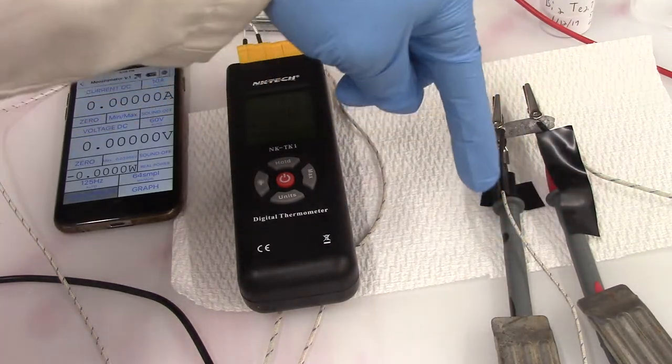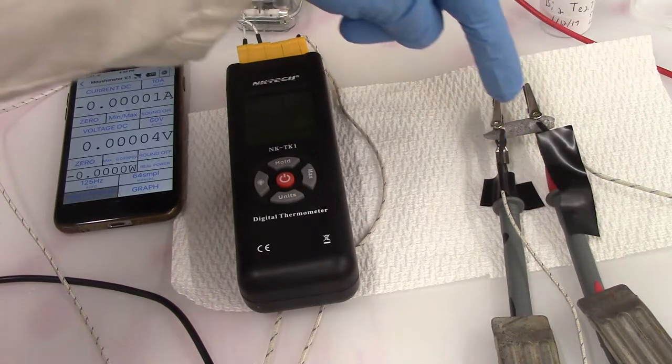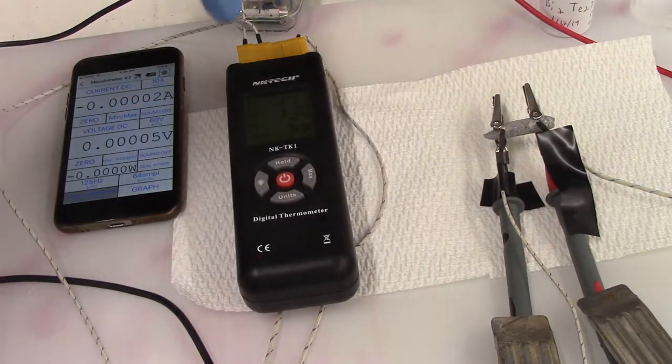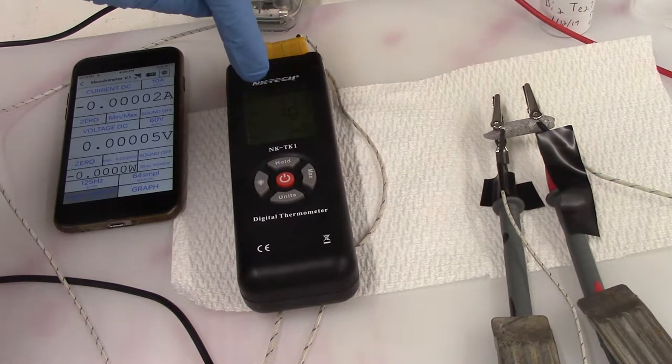And then these kind of skinny wires right here, those are basically a thermometer. So on this gauge here, this is the thermometer.